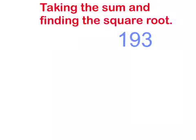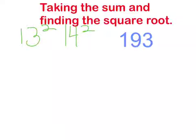Now we are going to take our sum, 193, and we are going to find the square root. We are going to say that 193 is probably in between 13² and 14², because 13² is 169 and 14² is 196.